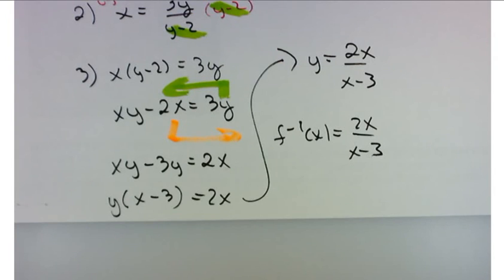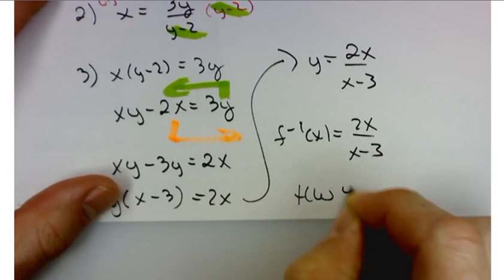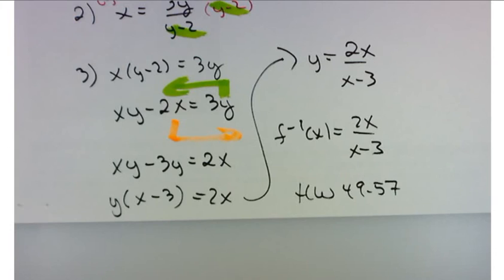So let me just give you a couple problems from this section to look at in homework. We didn't do too much, so I'm not going to give a whole lot. Why don't you try problems 49 through 57. Homework: 49 through 57. Wow, five problems. Just the odds.